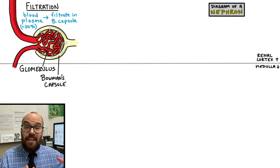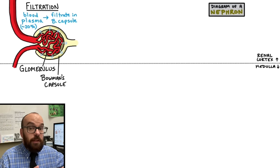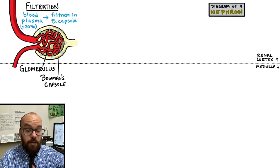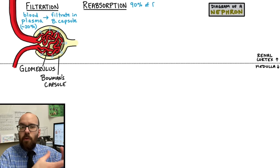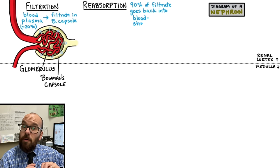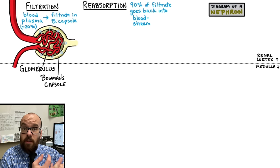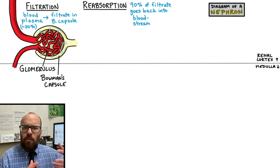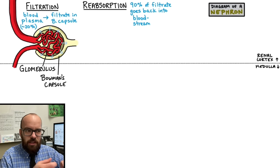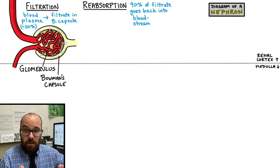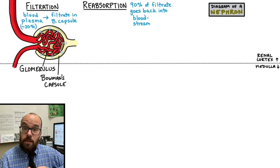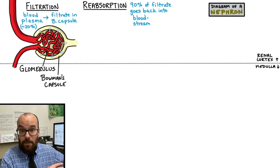If we urinated out 180 liters per day, we would get dehydrated super quick and wouldn't have enough fluid to survive. So luckily, filtration is not the only thing that occurs — we also have the process of reabsorption. We're going to take a lot of fluid out of our blood, but put most of it back, keeping out only stuff we want to get rid of: water if we have too much, other wastes, and salts if we have too much salt. We filter out lots of things — even stuff we want to keep — and then selectively determine what to put back into the bloodstream.